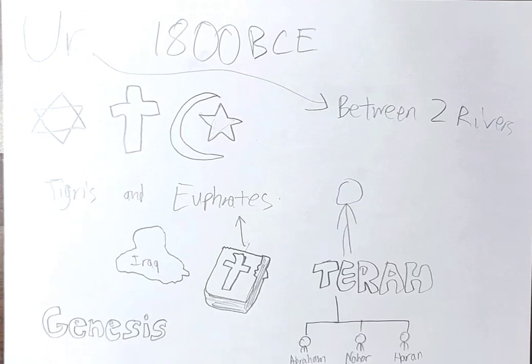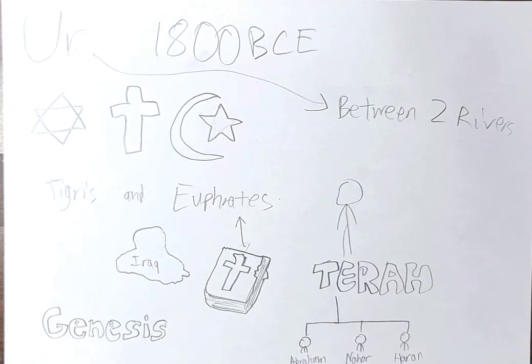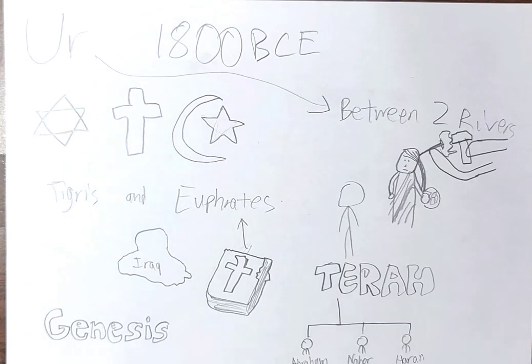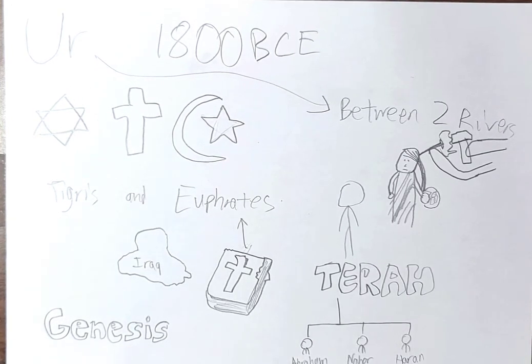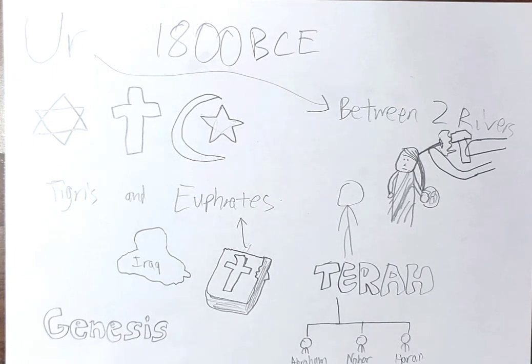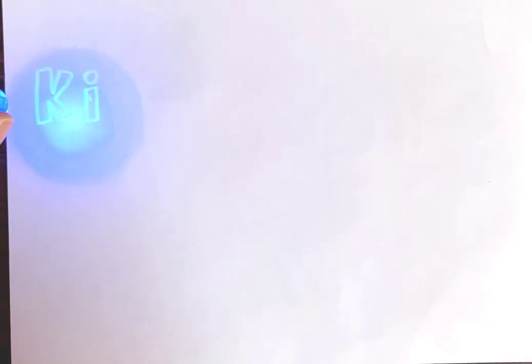Terah had a profitable sideline making statues or idols of the gods worshiped by the people of the region. The Mesopotamians had four top gods. Anna was the god of the heavens, she was the goddess of the earth.